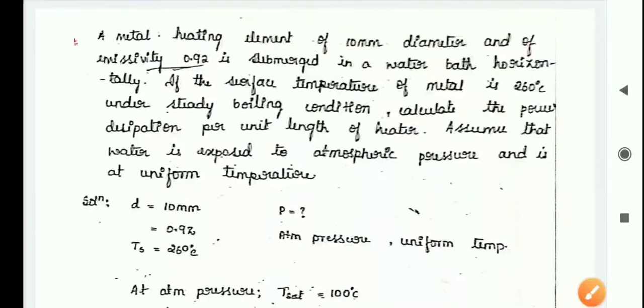Hello students, this problem is based on film boiling. A metal element having a diameter of 10 mm and emissivity 0.92 is submerged horizontally in a water bath. If the surface temperature of the metal is 260 degree Celsius under steady boiling condition, calculate the power dissipation per unit length of heater.